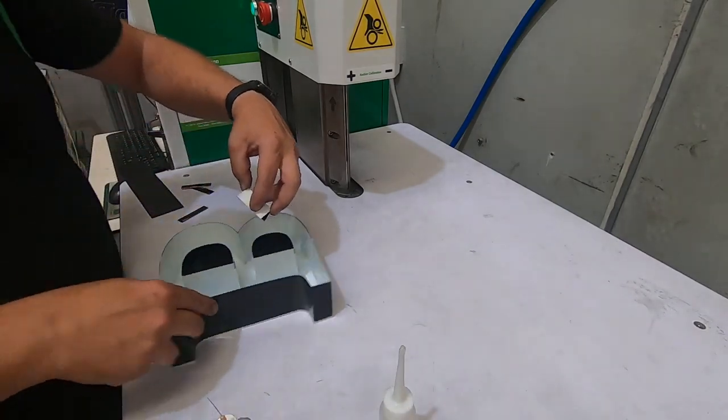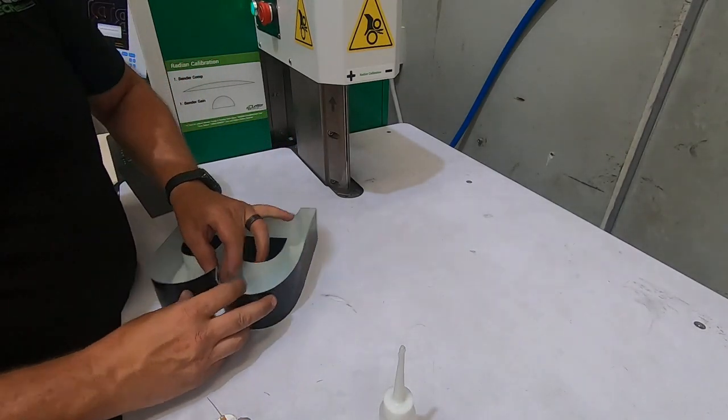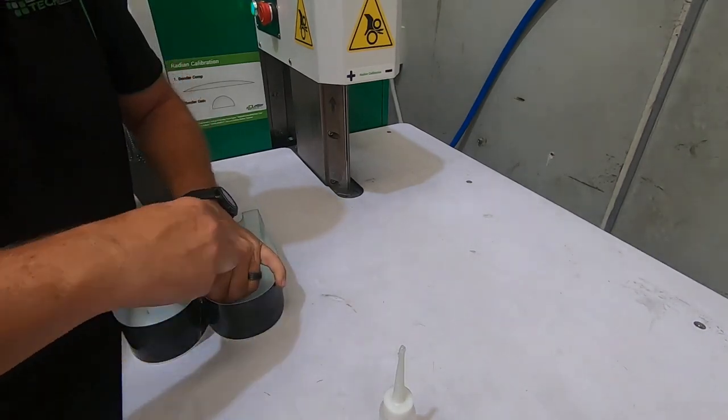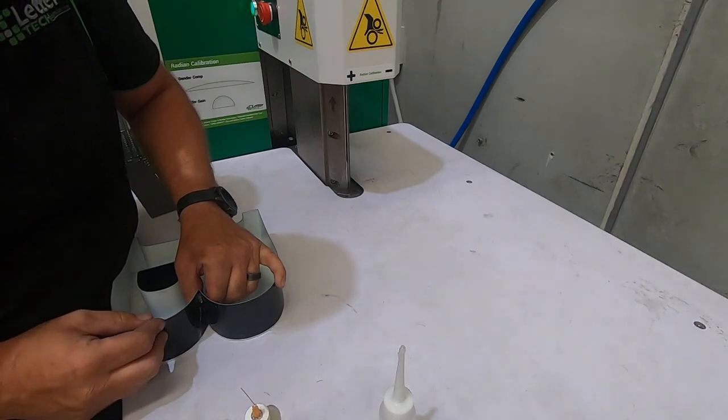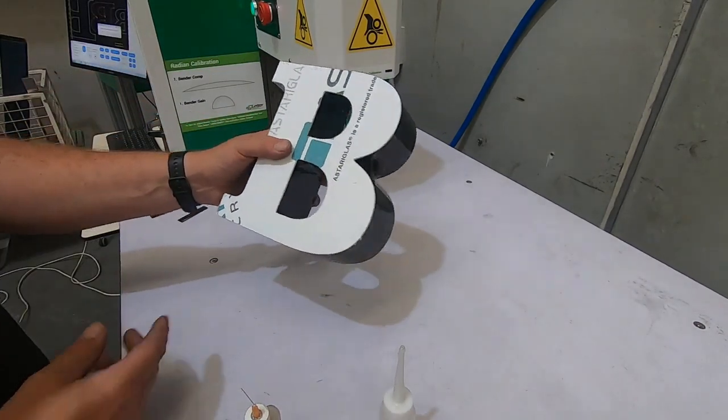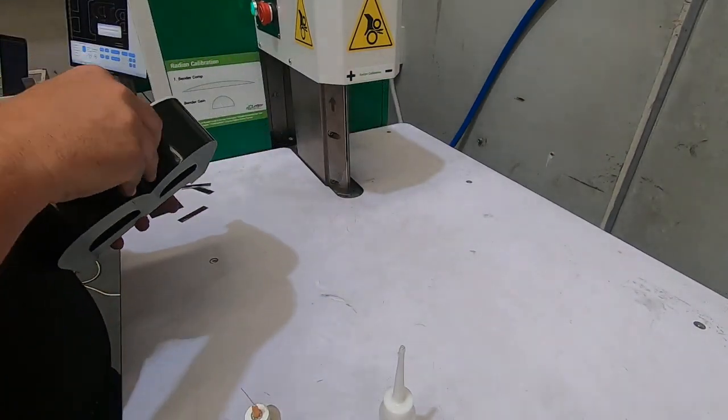Just move into that last little bit of the letter now. Nice joiner in there, nice and tight. Bit of hardener on it. And that's our letter glued up, nice and simple, nice and fast.